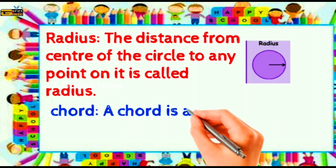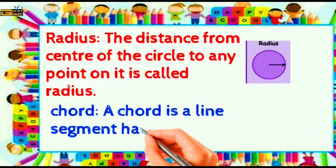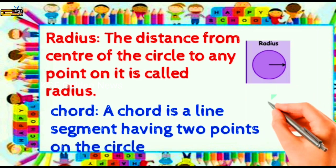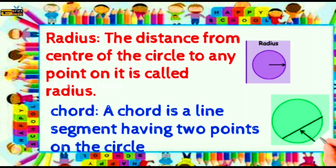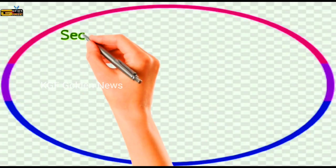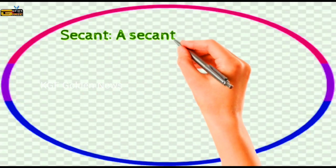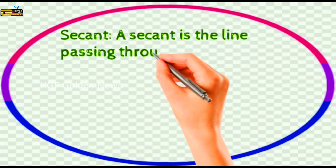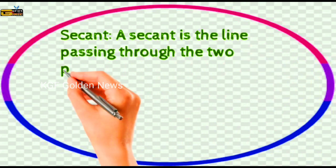Chord: A chord is a line segment having two points on the circle. Secant: A secant is the line passing through the two points in and out of the circle.